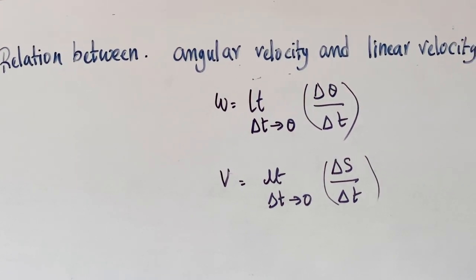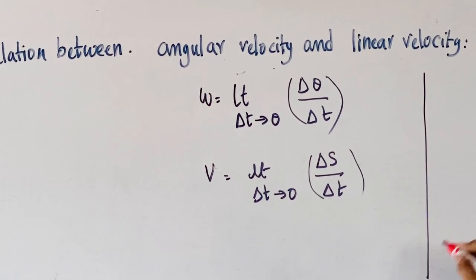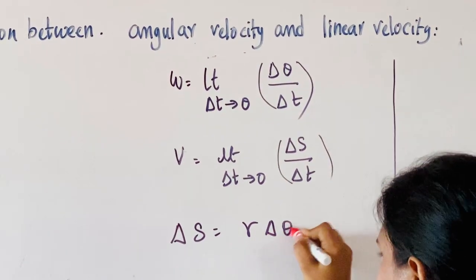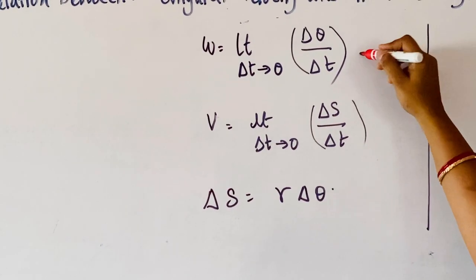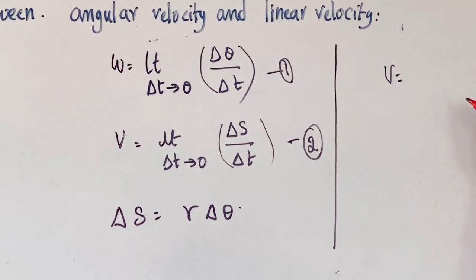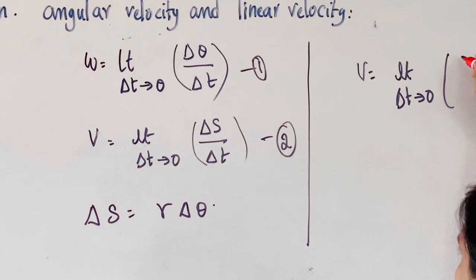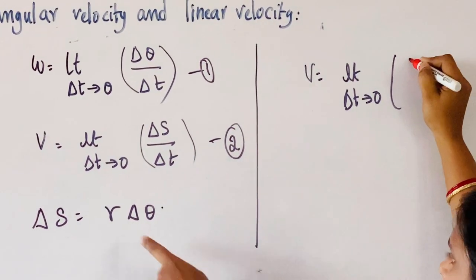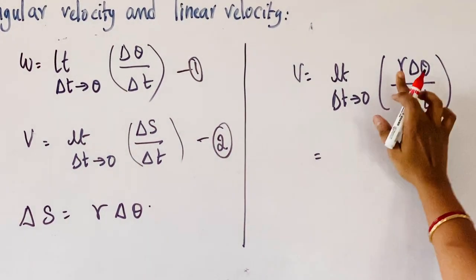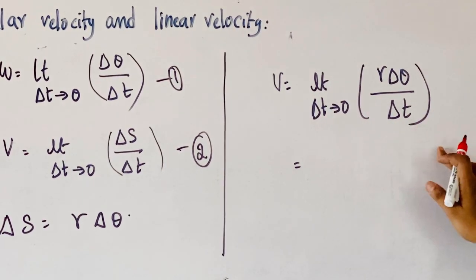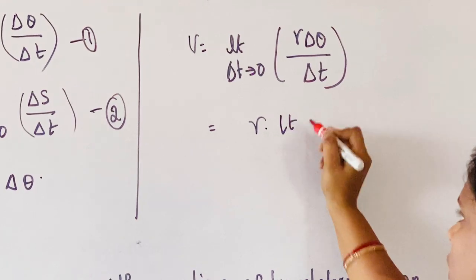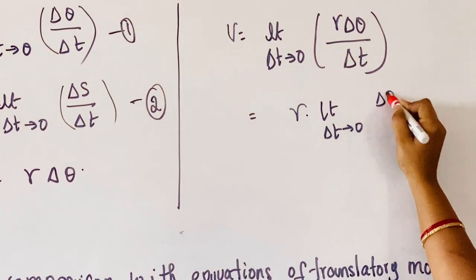We are going to establish a relation between angular velocity and linear velocity. We already know that delta-s equals r·delta-theta. Substituting this into the linear velocity equation, v equals the limit as delta-t tends to 0 of r·delta-theta by delta-t. With respect to time, angular displacement will change, but the radius r will not change — it is a constant value — so we take r outside: v equals r times the limit as delta-t tends to 0 of delta-theta by delta-t.